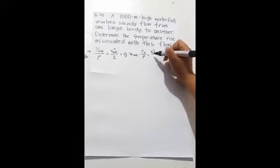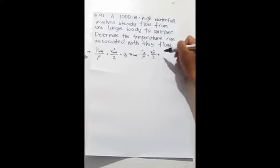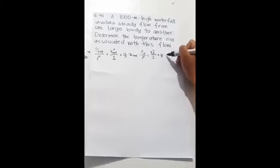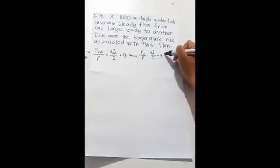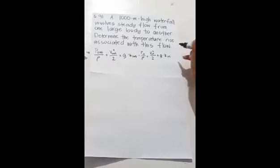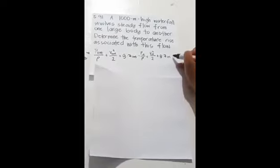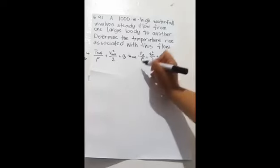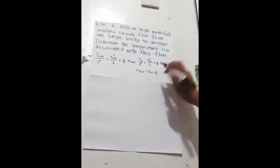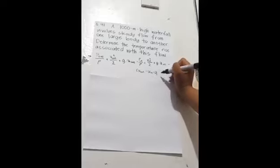All over 2 plus G times Z in minus U out minus U in minus Q in.